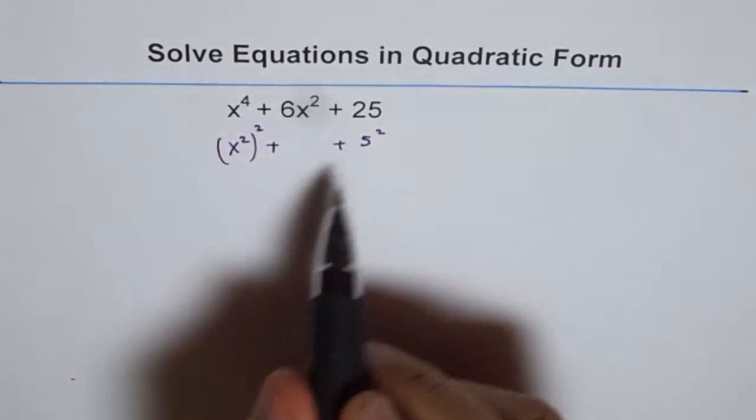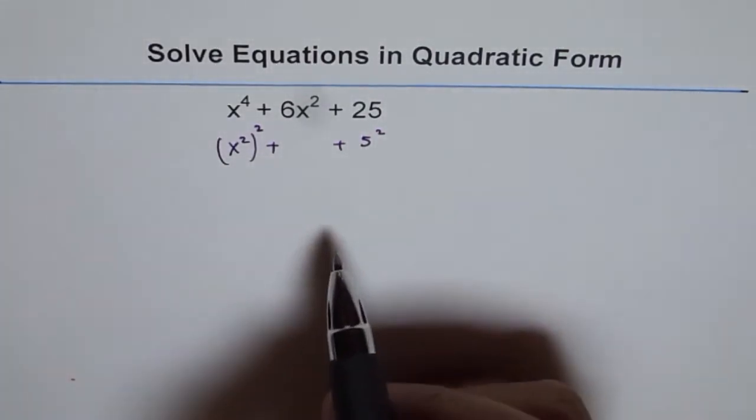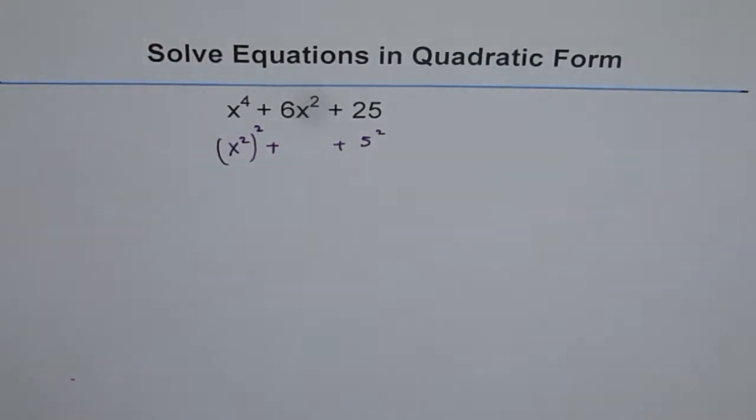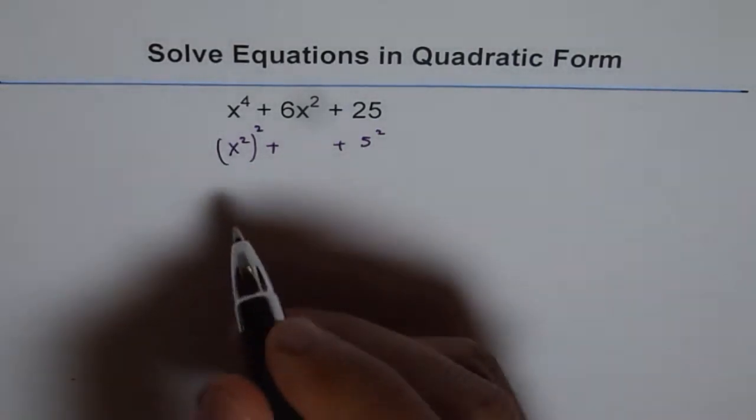And so we can expect this to be (x+5)^2. But strictly speaking, what is (x+5)^2? Let's expand it out.